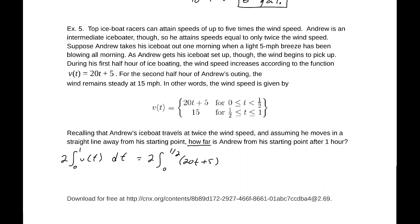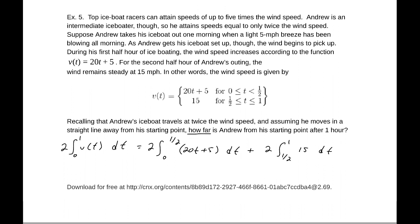Now because we have a piecewise function, from 0 to 1 half we have one function, 20t plus 5, and then 2 times, that will be from 1 half to 1, and it is traveling at 15 miles per hour. So let's leave that constant out here. That will be t squared divided by 2, so that would be 10t squared, that's 5t evaluated from 0 to 1 half, plus 2 times 15t evaluated from 1 half to 1.